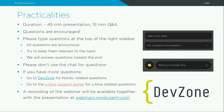Some practicalities before we jump into the presentation from uBlocks. The webinar will last for approximately one hour — 40-45 minutes of presentation and then a Q&A at the end. Please put your questions in the top of the right sidebar. All questions are anonymous; try to keep them relevant to the topic. You can also use the chat, but please try to avoid using that for questions. For more questions, you can go to devzone for Nordic-related questions, and uBlocks also has a support portal.